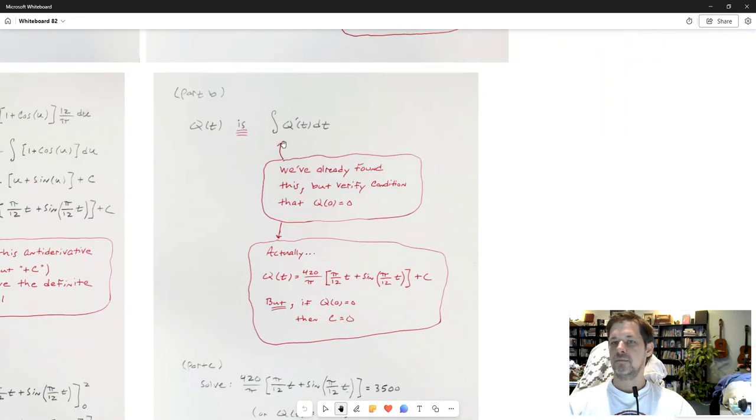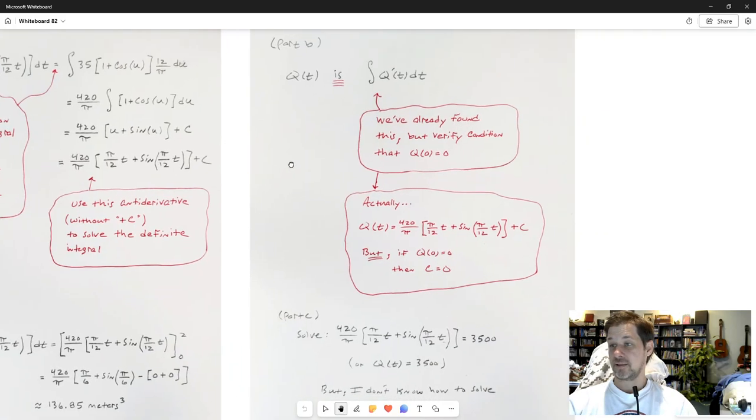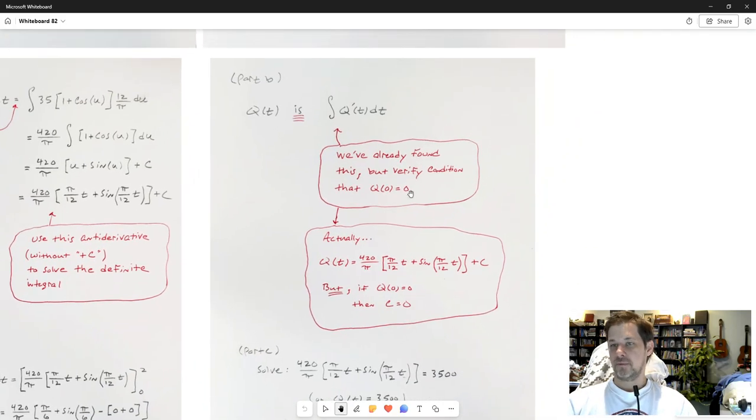I'll think about it like this. q(t) is the antiderivative of q', because you take the derivative of q and you get q'. So that would seem to work. And we've already found when I worked this out, I found the antiderivative of 35 times 1 plus cosine pi over 12 of t, I basically got that. But I would have to work something out about that constant. q(t) is the antiderivative of q'. q(t), which is what I'm looking for, is something that if you took the derivative of it, you would get q'.